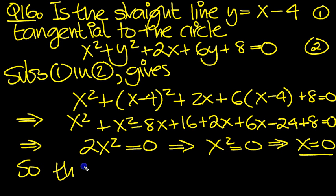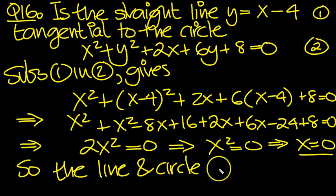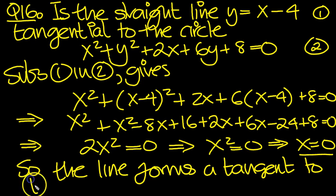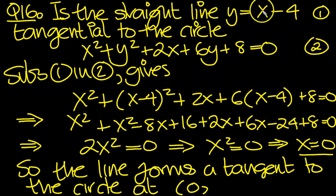So the line and circle—the line is tangential to the circle, I should have said. So the line forms a tangent to the circle at x equals 0. When you put 0 in here, you'll get y equals minus 4.